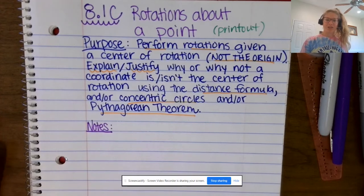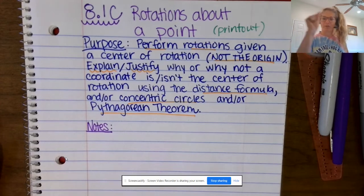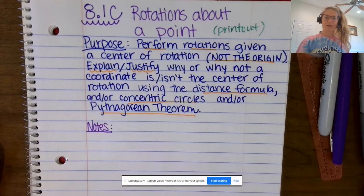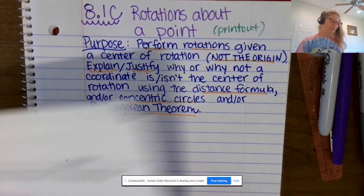We're going to explain and justify why or why not a coordinate is the center of rotation — where the pre-image rotates to get to the image — and we're going to do that using the distance formula, concentric circles, and/or the Pythagorean theorem. Let's get started.